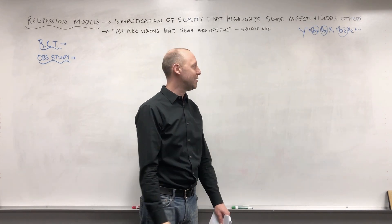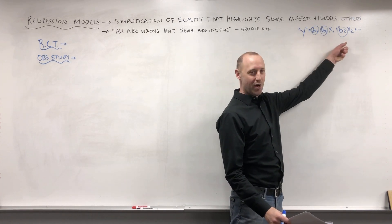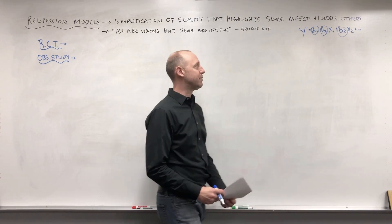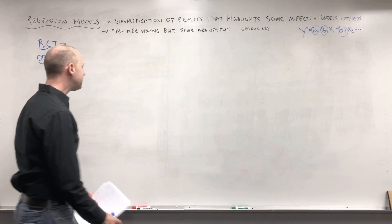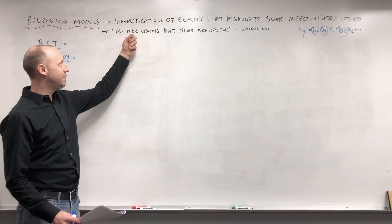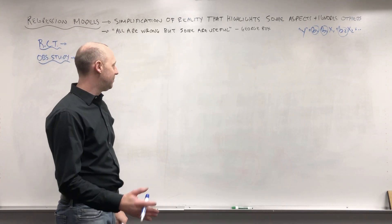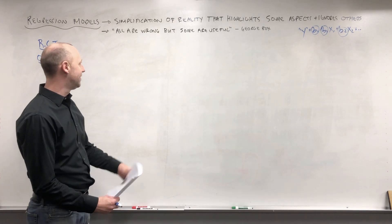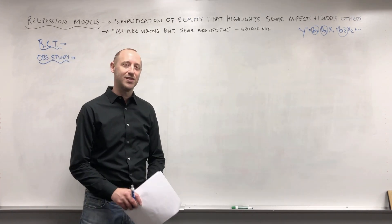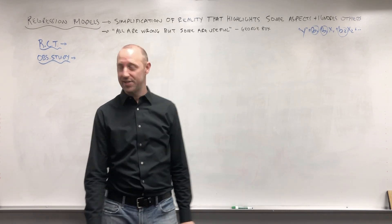We're taking data that can be hundreds, thousands, or millions of observations and boiling it down to a few model coefficients, their standard errors, and a few other things that describe the relationships within the data. A quote I like from statistician George Box fits the same theme: 'All models are wrong but some are useful.' I've always thought of it as an extension — all theory is wrong but some is useful. Theories are oversimplifications of reality, but they help us understand it.